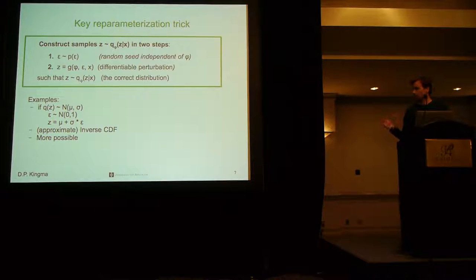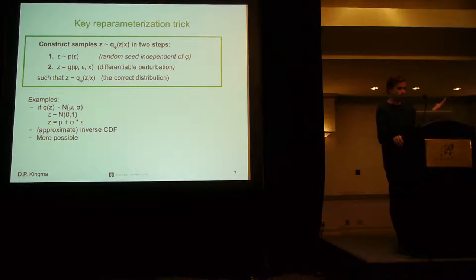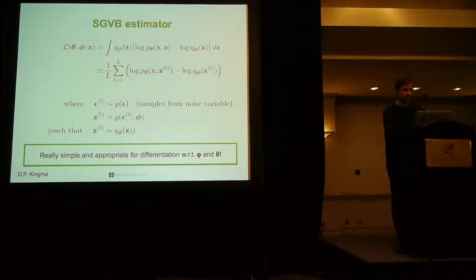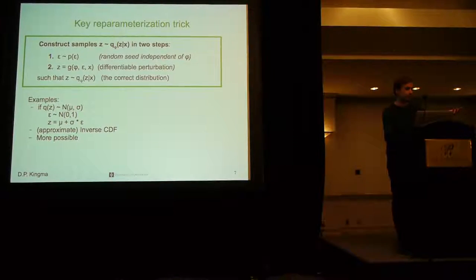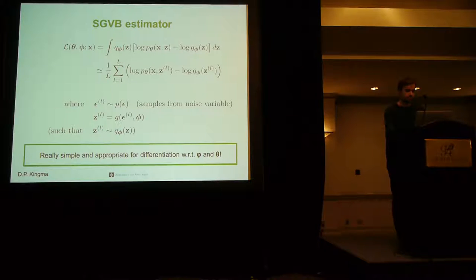For example, for the normal distribution, it's really simple. All we have to do is that for epsilon, we choose this standard normal, and then for our perturbation, we simply shift and scale. But there are much more possibilities possible. This can basically be done for a lot of different distributions.